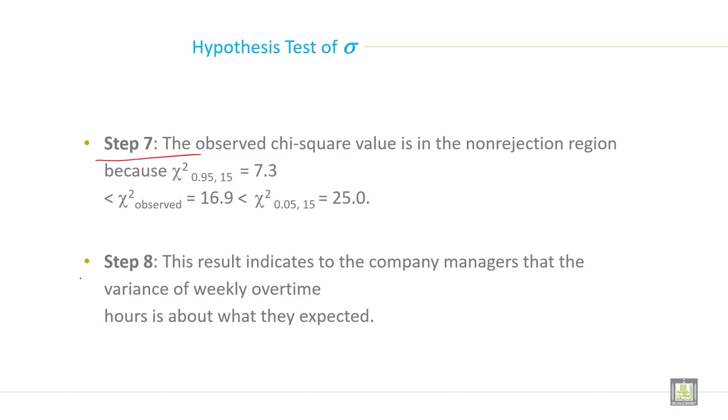So what are the implications? Step 8, this result indicates to the company managers that the variance of weekly overtime hours is about what they expected.